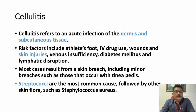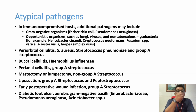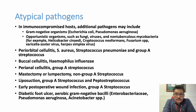Streptococcus is one of the most common causes for skin infection, sometimes associated with Staphylococcus. In immunocompromised patients or those with chronic ulcers, gram-negative organisms may replace gram-positive ones — such as E. coli, Pseudomonas, and opportunistic organisms like fungi, viruses, non-tuberculous mycobacteria, Helicobacter, Cryptococcus, Varicella, and Herpes.